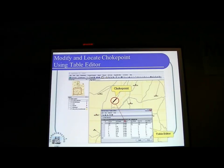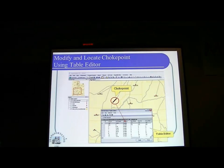You may be familiar with this one. We can use the table editor to modify the property of the links. So if this link is a choke point, we can modify the property of the links in such a way that the truck cannot pass through the choke point, and we need to find what is the second best route to connect between origin and destination.